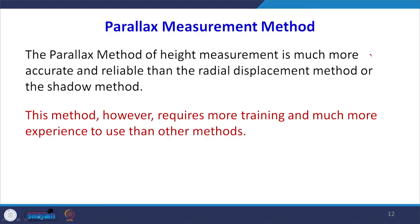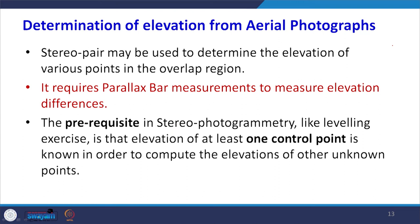Taking several observations can yield an even closer value. The parallax bar measurement method is quite satisfactory and reasonable for determining object height. It is much more accurate than the shadow method or the relief displacement method, and is reliable, though it requires more training and experience since it involves creating a 3D model, taking parallax bar readings, and using the elevation formula.